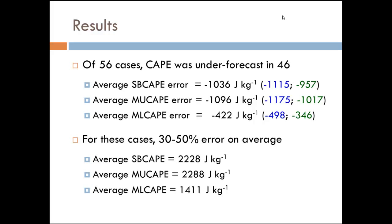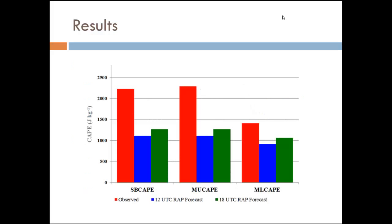The average surface-based CAPE error was again over 1,000 J/kg. Same with most-unstable CAPE error. The ML CAPE error was a little smaller, but the average ML CAPE was also lower. So overall we're looking at a 30 to 50 percent error on average for those 46 cases that were underestimated. Looking at it graphically: the red is the observed, the blue is the 12Z forecast valid at 0Z, and the green is the 18Z forecast, also valid at 0Z. You can see the observed was much higher, and usually the forecast got a little better at the 18Z run, but it's still pretty far off.